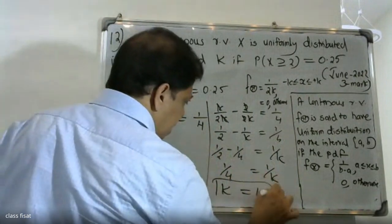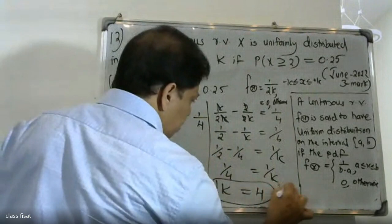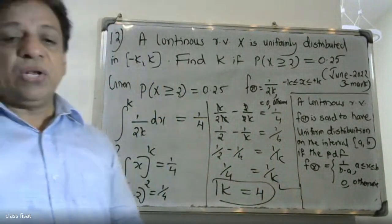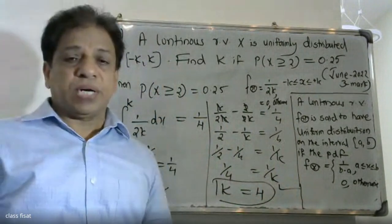Verification: substituting k equals 4 back confirms 1 by 4 equals 1 by 4, so k equals 4 is correct.